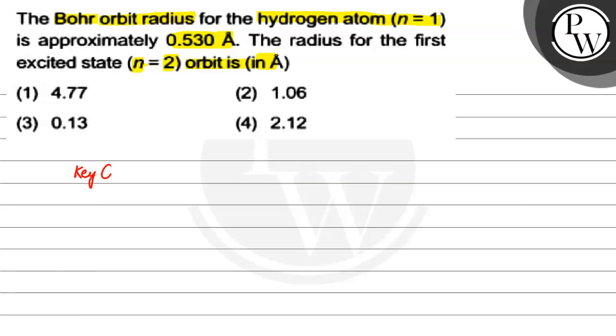So what is the key concept which we will use? It will be Bohr's radius for hydrogen-like species. This is given by 0.530 angstrom times n squared divided by z.